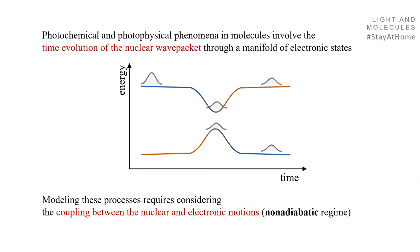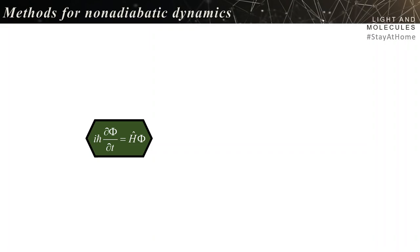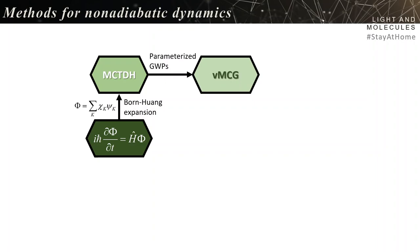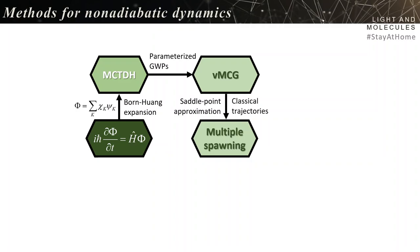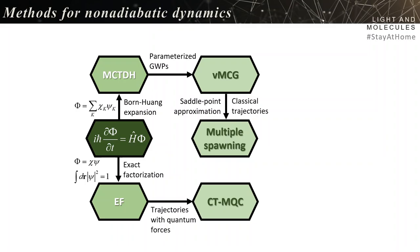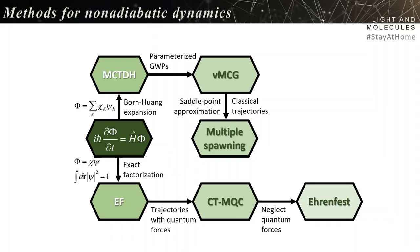There are many ways to do that, starting from the time-dependent equation. You can expand the molecular wave function in the Born-Huang way and get a method like MCTDH, which in the non-relativistic limit is the correct method with the exact solution. Using parameterized Gaussian wave packets gives VAMCG, and imposing the saddle-point approximation with classical trajectories gives multiple spawning. Alternatively, you can go through exact factorization for a different expansion of the molecular wave function: trajectories with quantum forces give CTMQC, and neglecting quantum forces gives classical Ehrenfest dynamics.